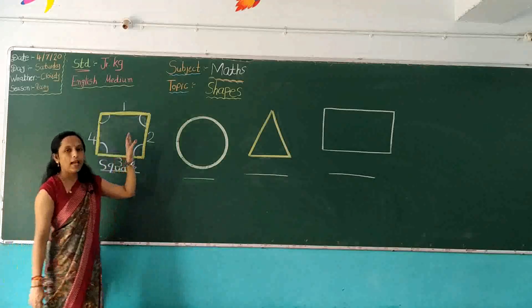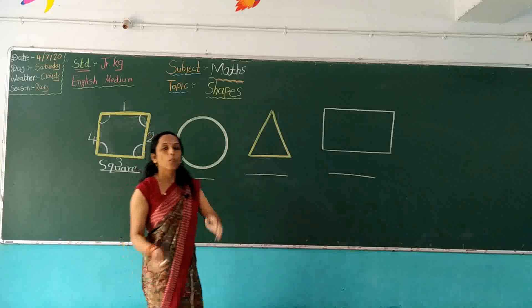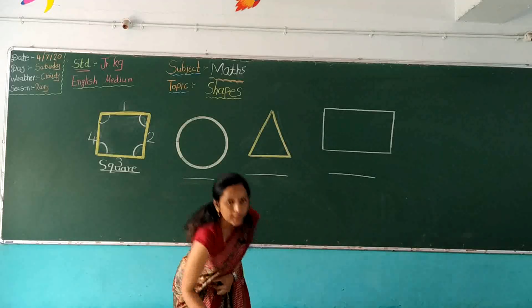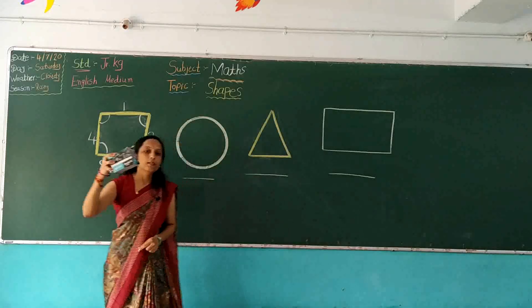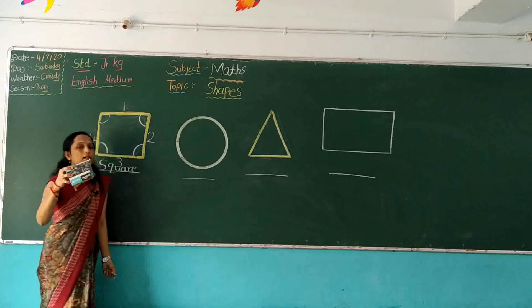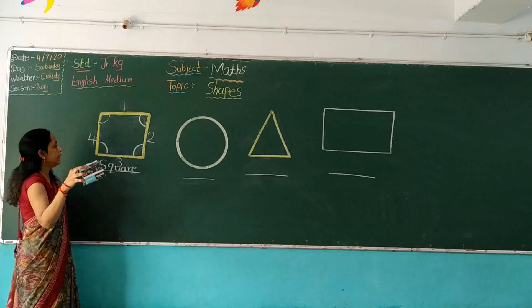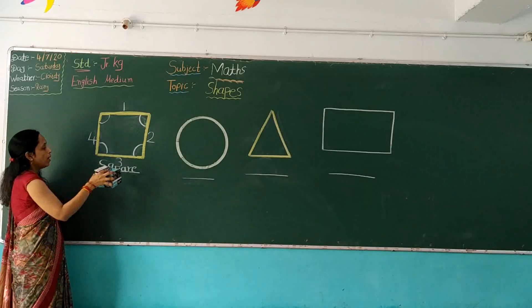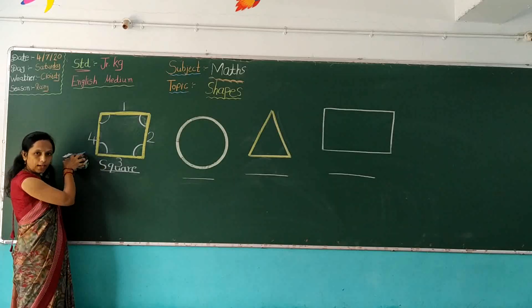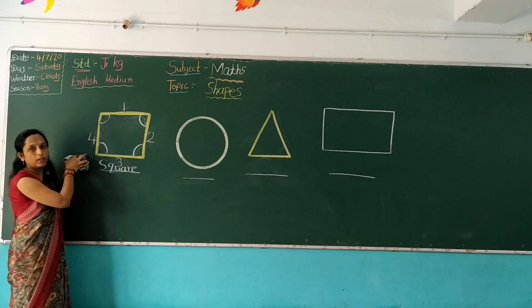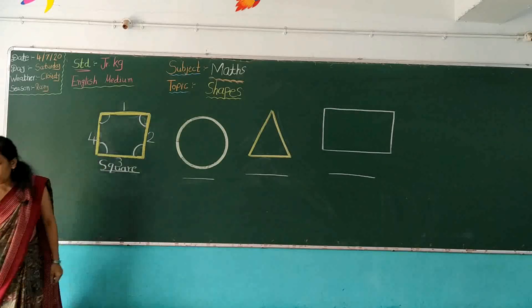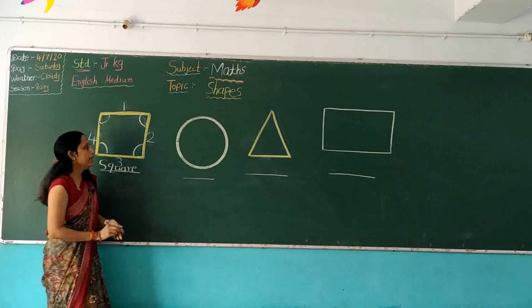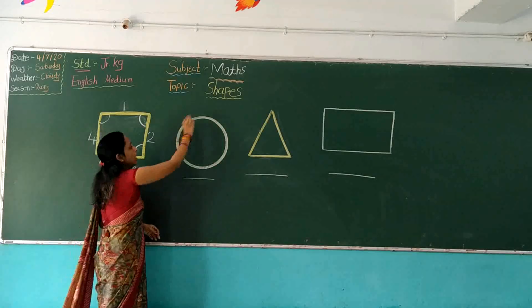It is like a box. Which shape is this box? This is a box. The box is square shape.